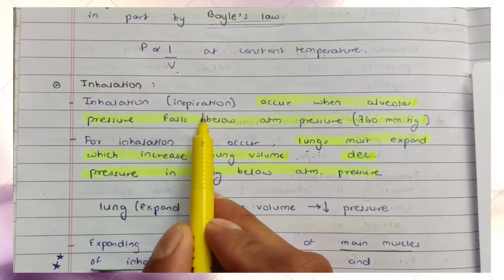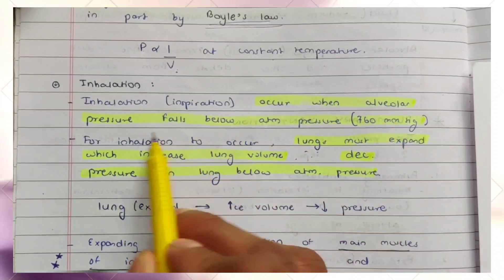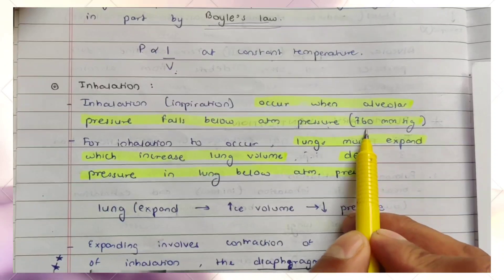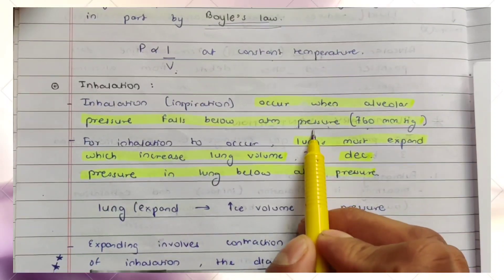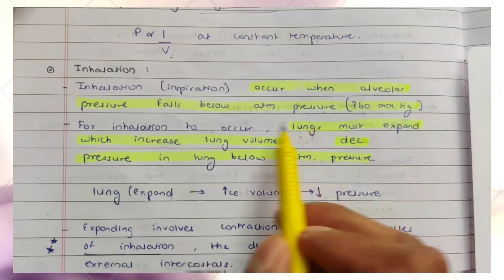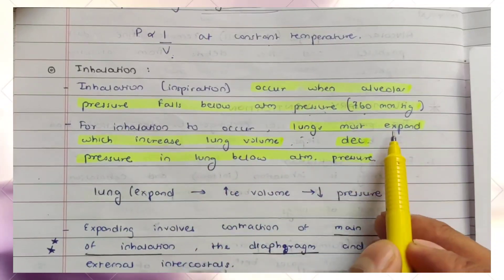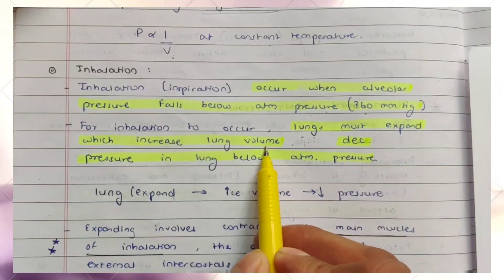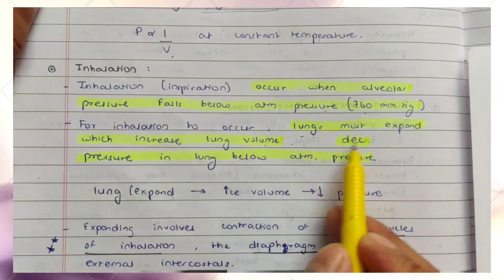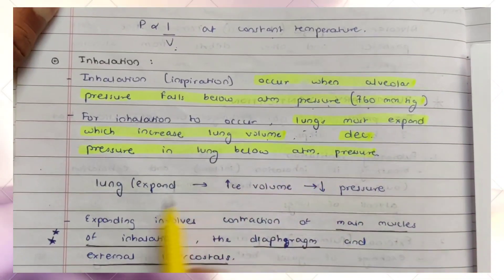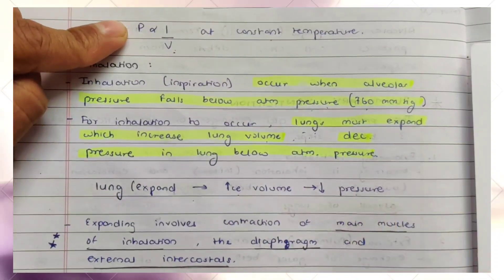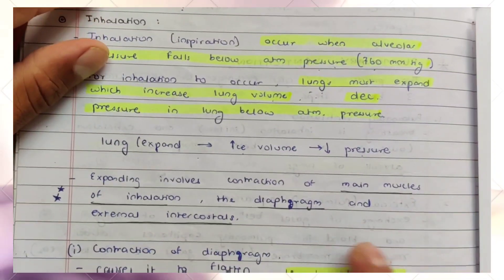Inhalation, or inspiration, occurs when alveolar pressure falls below atmospheric pressure — that is, when lung pressure becomes less than 760 mmHg. For inhalation to occur, the lungs must expand, which increases lung volume. This is consistent with what Boyle's Law states.